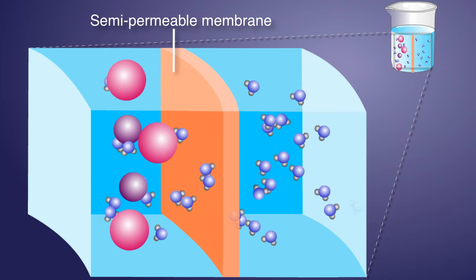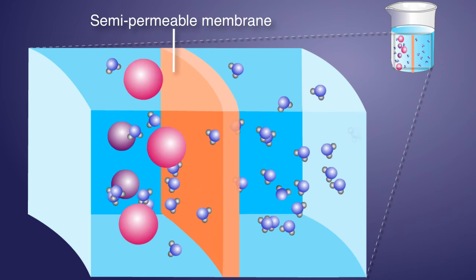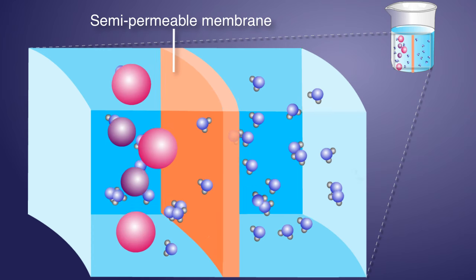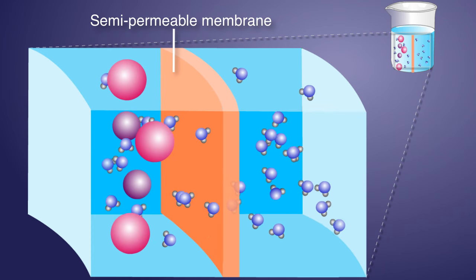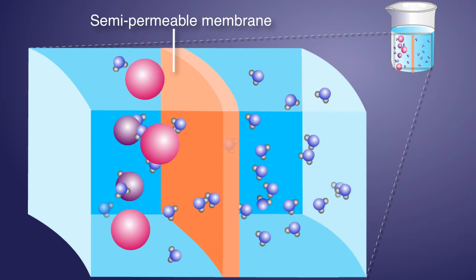A semipermeable membrane, also called a selectively permeable membrane, is a membrane that allows certain molecules or ions to pass through it while blocking others.